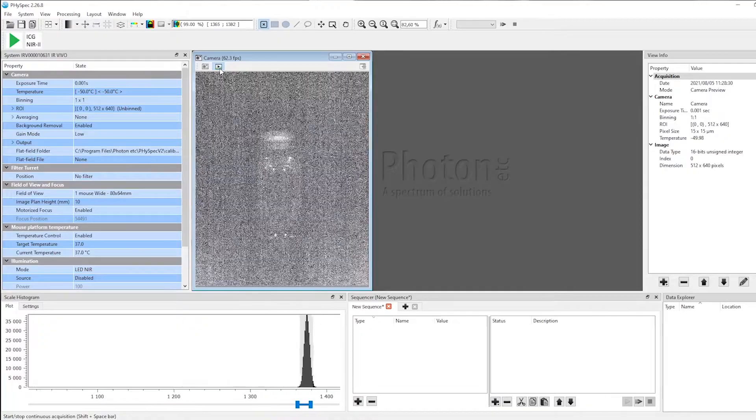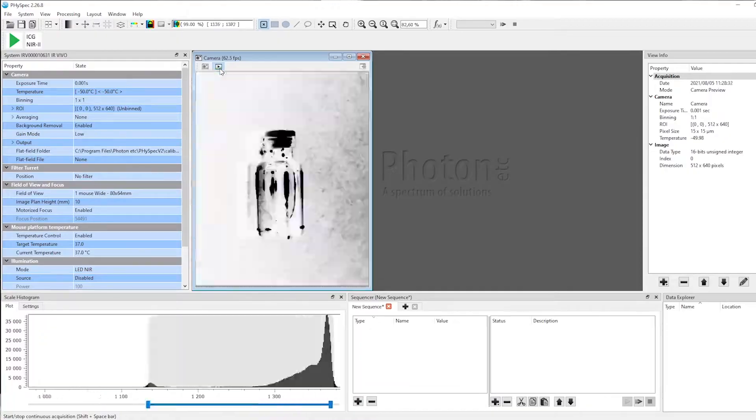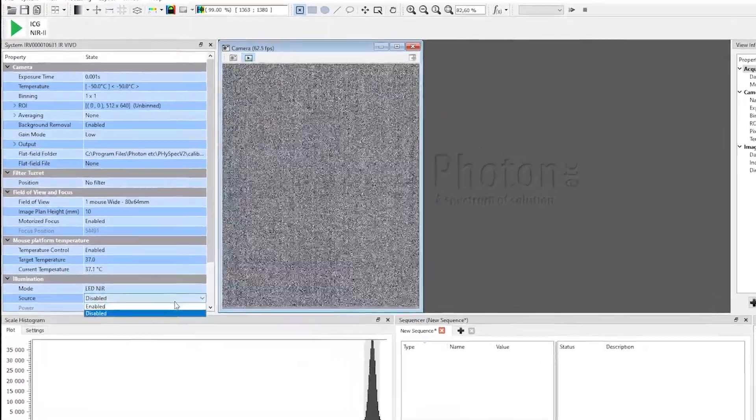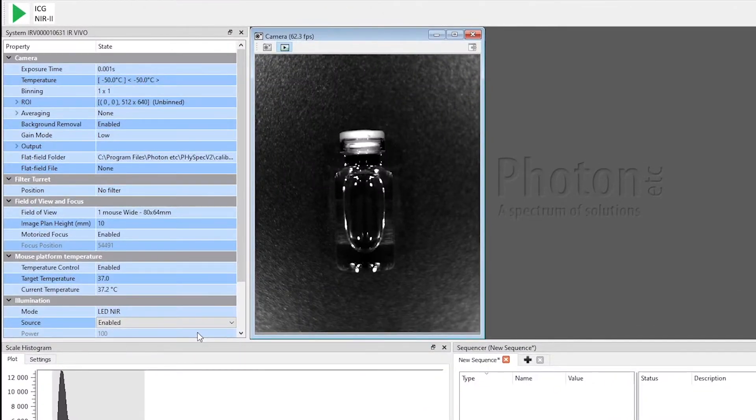So I'm just going to place it in the system and you can see it live without recording the video. As I close the door, the image disappears on the live view because it's light tight. I need to enable the LED near-IR source to view the broadband image.